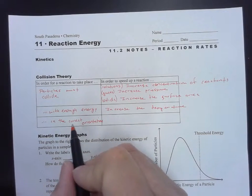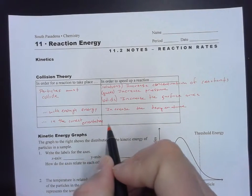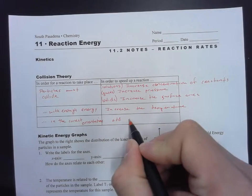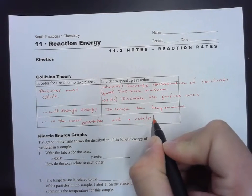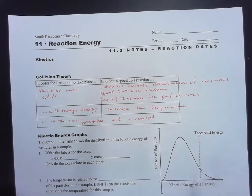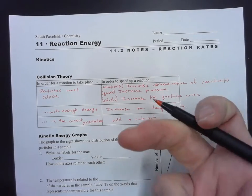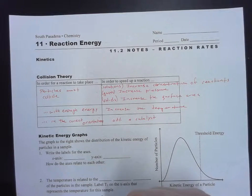For correct orientation, we can add a catalyst. Remember in the video, a catalyst is like a matchmaker. The catalyst will change the orientation of the particles so that the reaction doesn't require as much energy to get going.